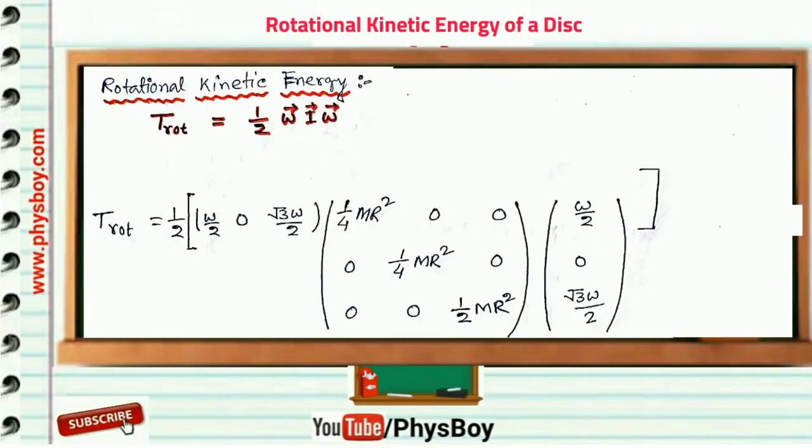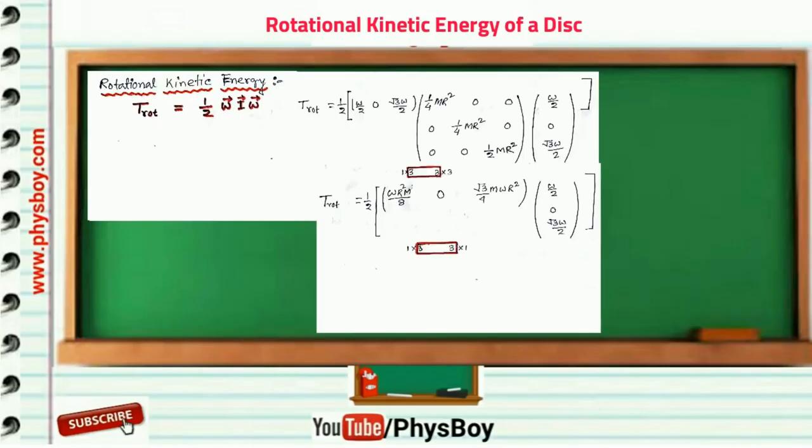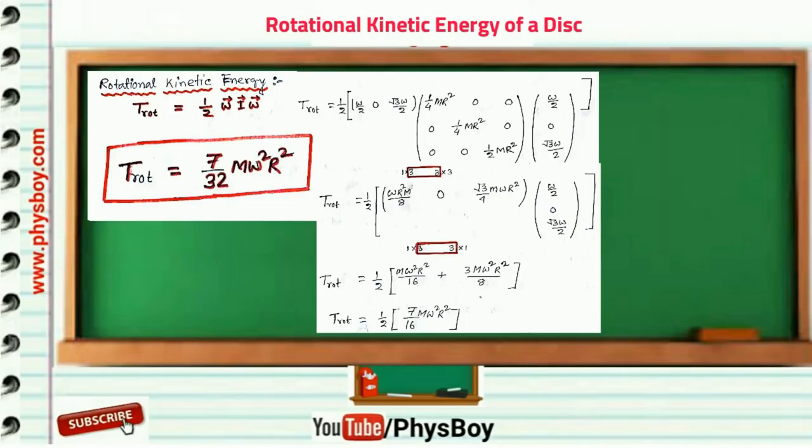Now multiplying a 1 by 3 matrix with a 3 by 3 matrix, we get a 1 by 3 matrix. And again, a 1 by 3 matrix is multiplying with a 3 by 1 matrix, we get a 1 by 1 matrix, that is a scalar number. So finally, rotational kinetic energy of this disk.